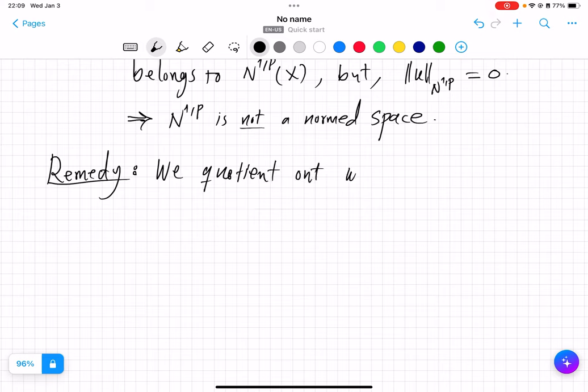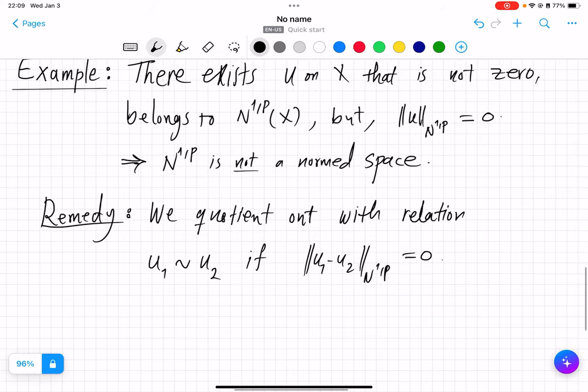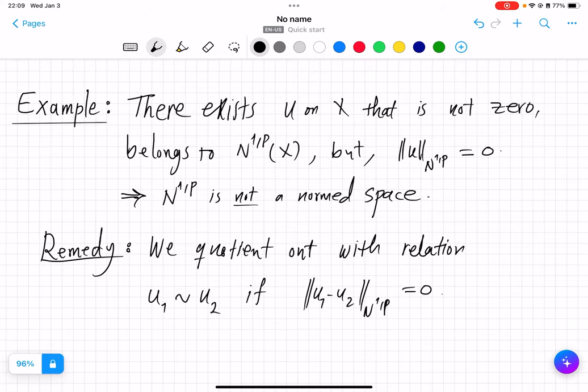With this relation that u1 is equivalent, we identify such two functions if ||u1 - u2||_{N^{1,p}} is equal to 0, in which case this example that we will construct will be identified with the 0 function because its norm is 0.